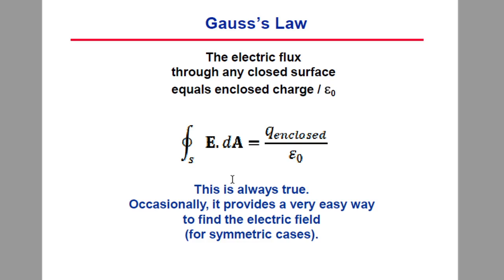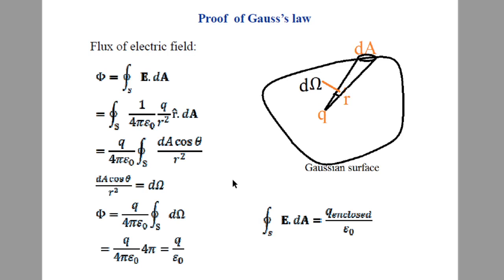There should be some symmetry for Gauss's Law to be practically useful. Gauss's Law is always true, but it is useful only for symmetric cases. For the proof of Gauss's Law, we consider a charge Q and an arbitrary shaped closed surface — it is not spherical, it is some arbitrary shape.